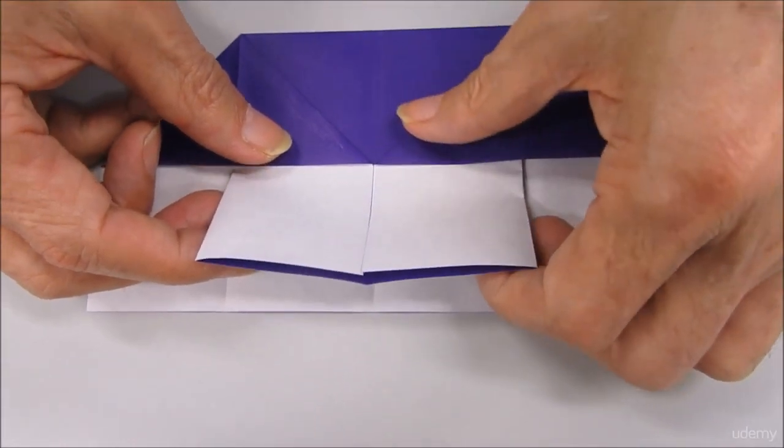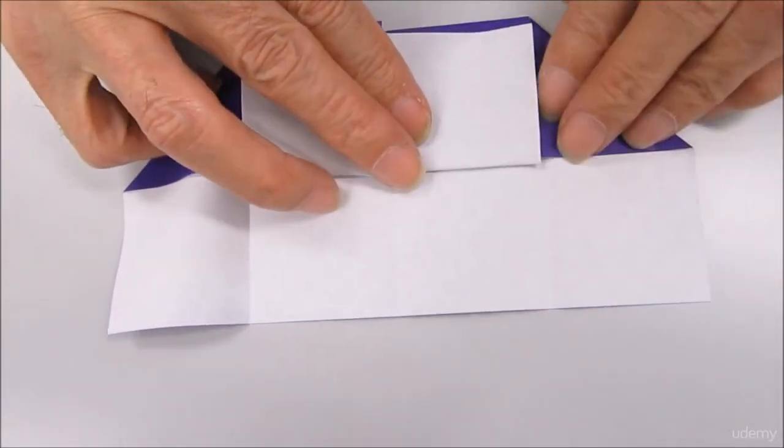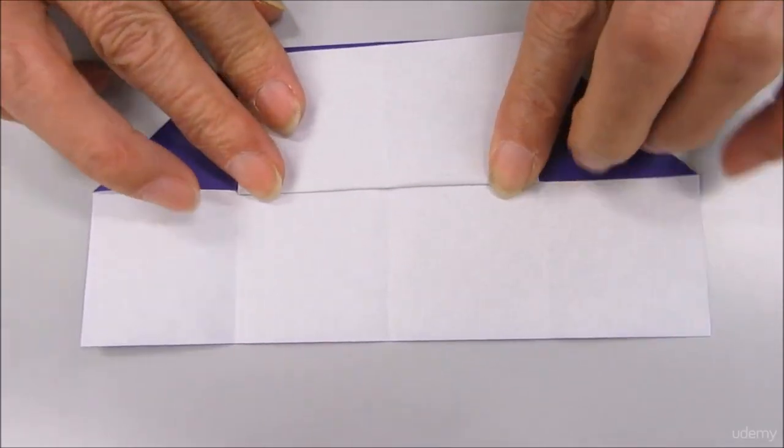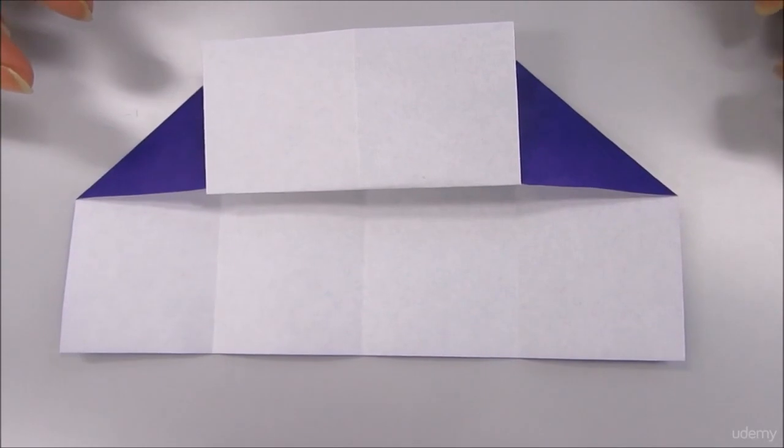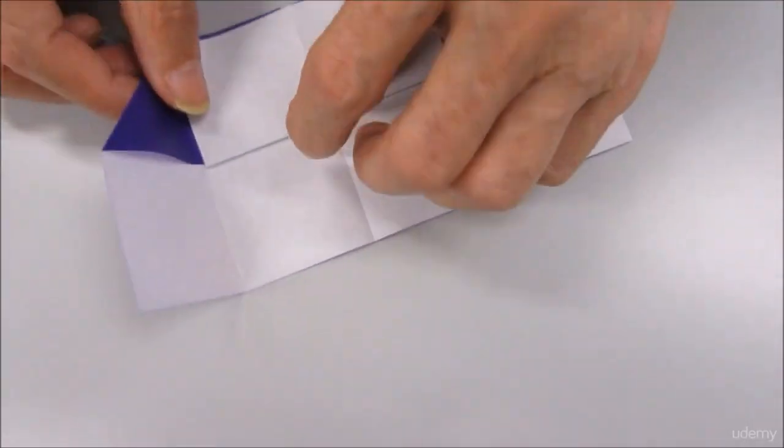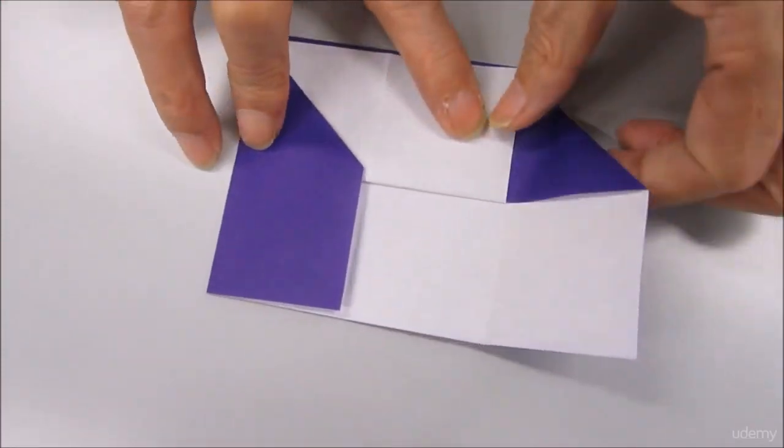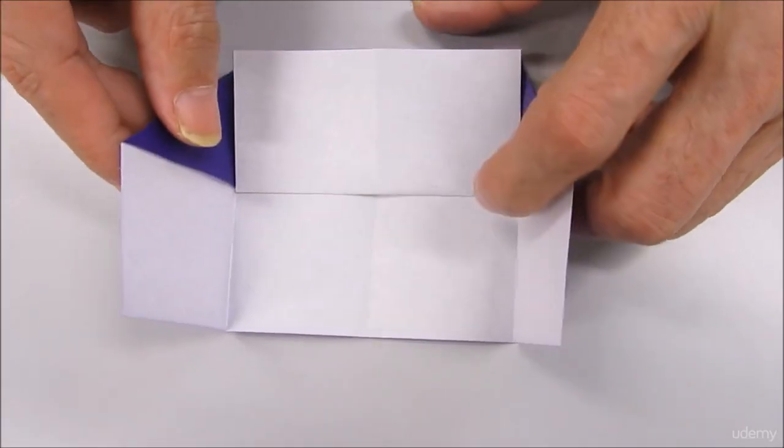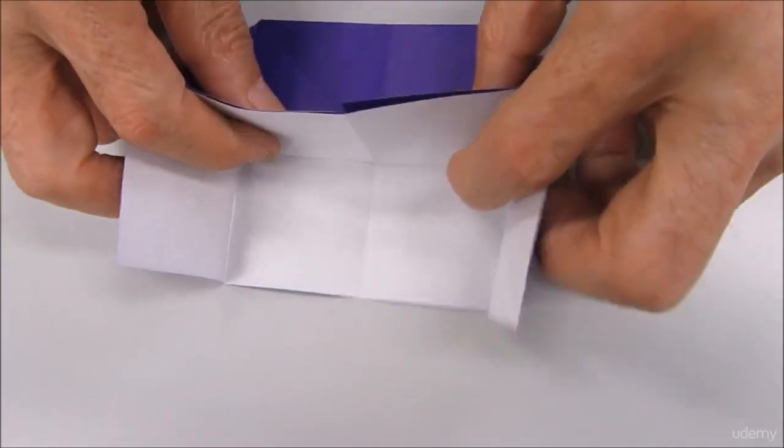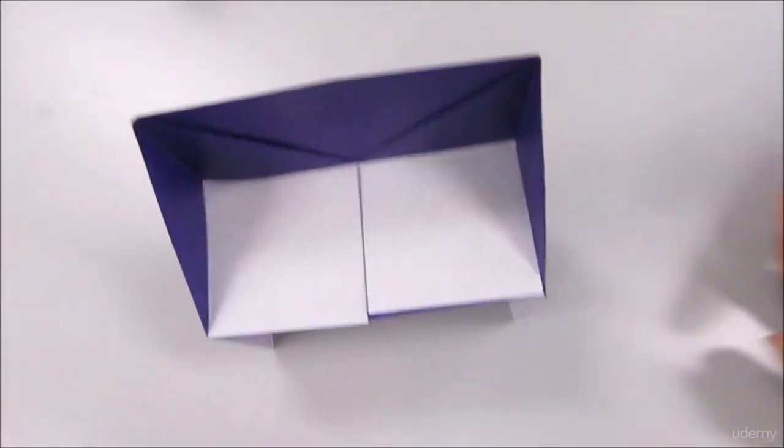In the center part, fold back toward upward. This area is going to be a side of the piano, and the center white part is going to be the keyboard.